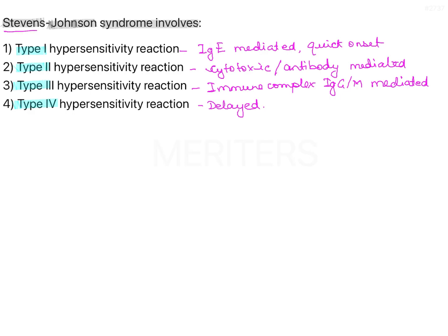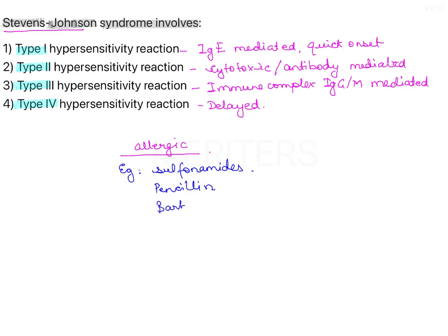Stevens-Johnson syndrome falls under type 3 kind of a reaction because it occurs as an allergic hypersensitivity reaction. This could occur in response to a few medicaments — for example, sulfonamides, penicillin, barbiturates, and phenytoin. These drugs can cause an allergic response leading to an immune complex kind of hypersensitivity reaction. There could also be lesions or infections associated with herpes and mycoplasma.